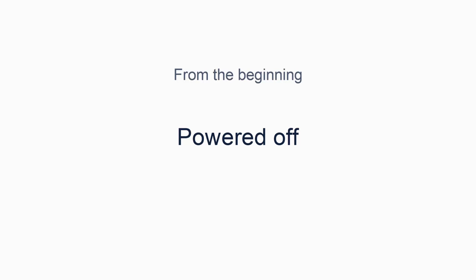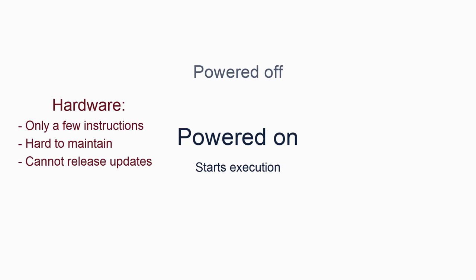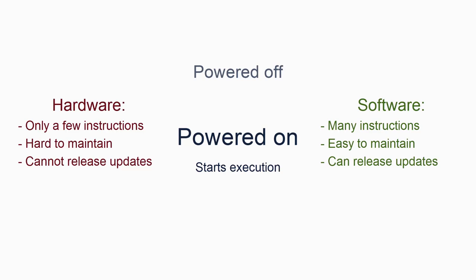When you press the power button, a variety of things happen, but the main upshot is that the processor powers on and starts trying to execute. Remember, when a processor is switched on, it must always have some instructions to execute. Very few instructions are pre-built into hardware. There are very good reasons for this, the main one being that software can be engineered, changed, and updated much more easily later on than hardware can be.